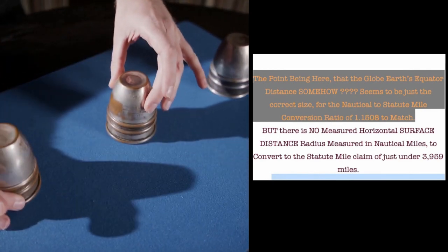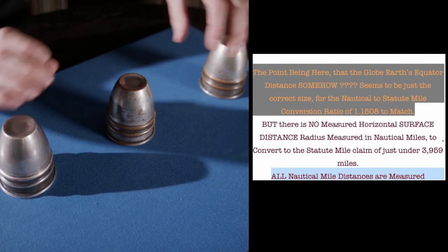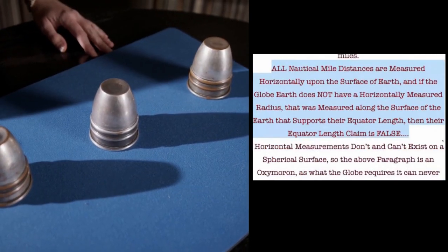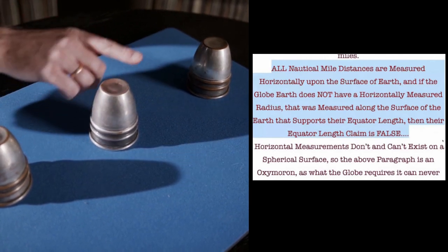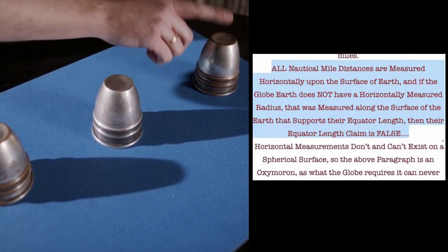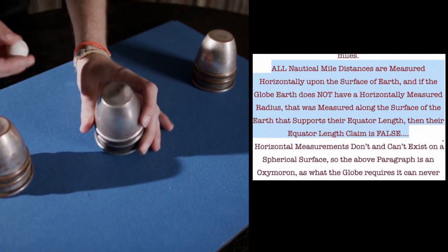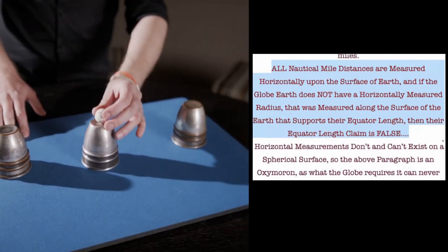But it's not, it's actually a destruction of the globe. All nautical mile distances are measured horizontally upon the surface of Earth, and if the globe does not have a horizontally measured radius that was measured along the surface of the Earth that supports their equator length, then their equator length claim is false.